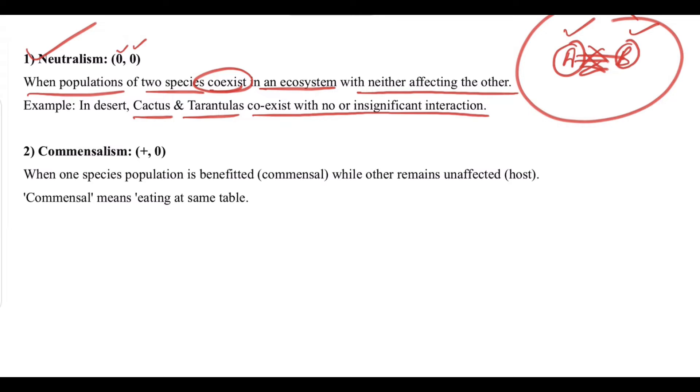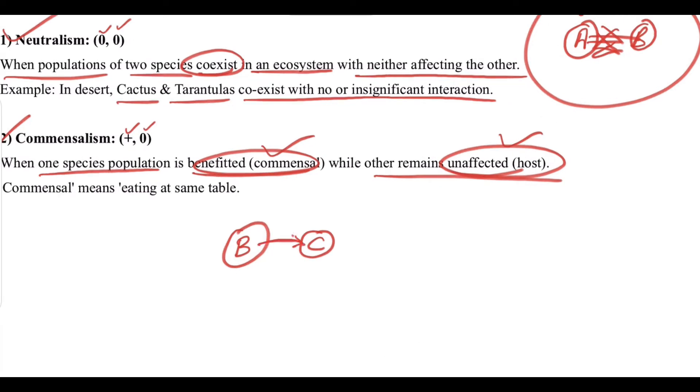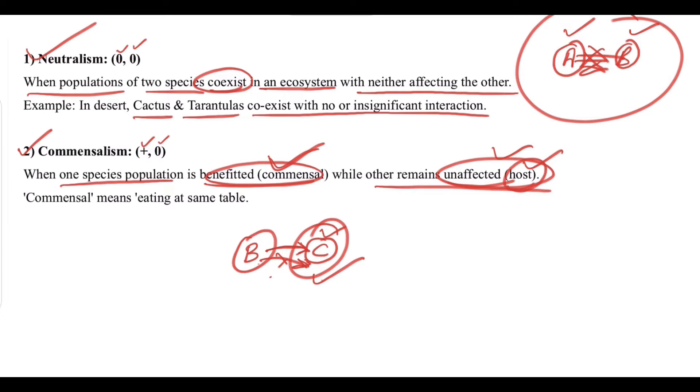Next we have commensalism, which is positive and zero. This means when one species population is benefited, that is the commensal, while the other remains unaffected, which is the host. So we have species B feeding upon species C. B becomes the commensal and C has no effect whether B feeds on it or not, making C the host in commensalism. Commensal means eating at the same table.